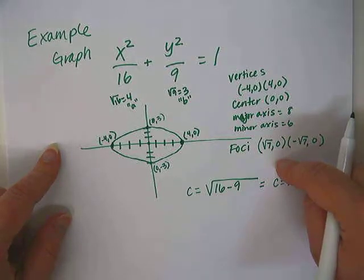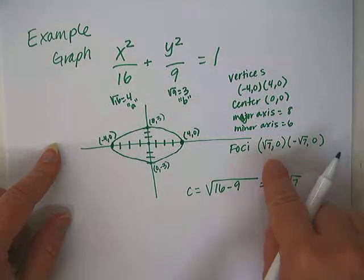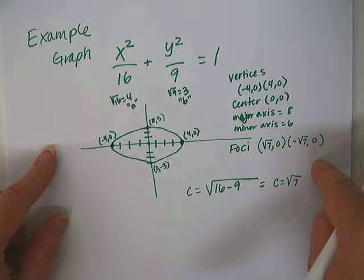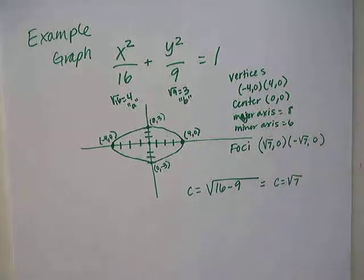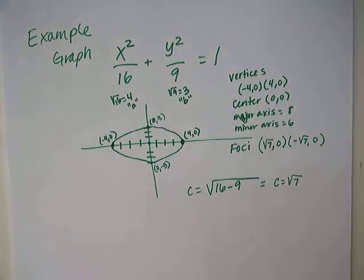What if the center was not at 0, 0? Then how would you figure this out? You would have to take that center point and add square root of 7 and subtract square root of 7 to get to the correct point. We'll probably do one like that.